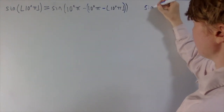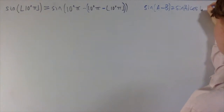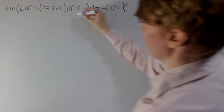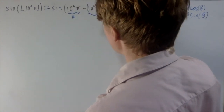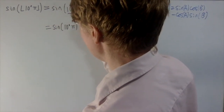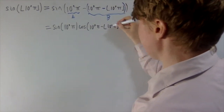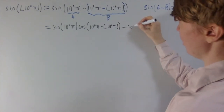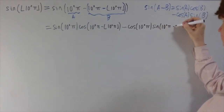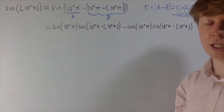Now I'll use the identity sin(A − B) = sin A cos B − cos A sin B on these two pieces. Putting this into the formula gives: sin(10ⁿπ)·cos(10ⁿπ − floor(10ⁿπ)) minus cos(10ⁿπ)·sin(10ⁿπ − floor(10ⁿπ)). This looks more complicated at first, but looking closer we can simplify.